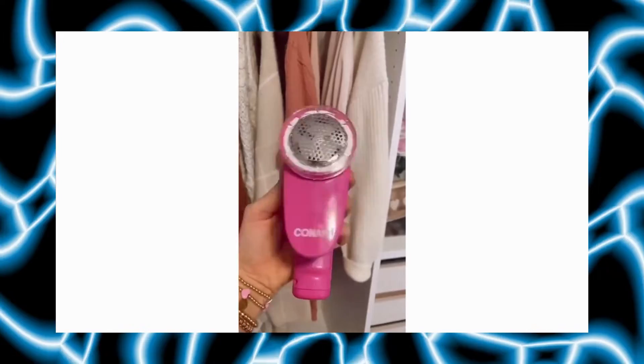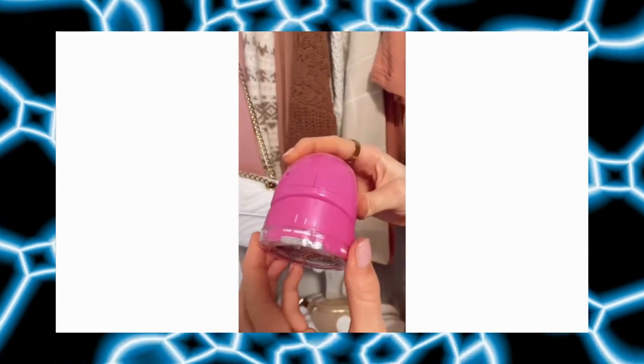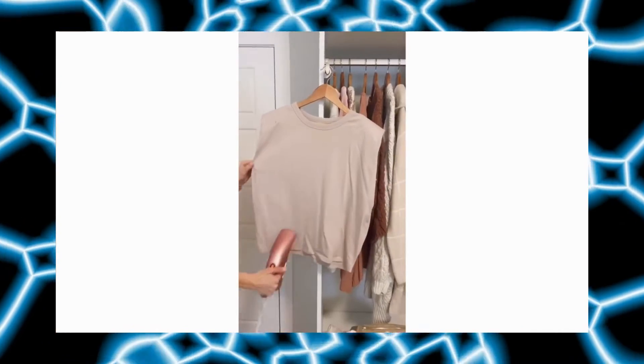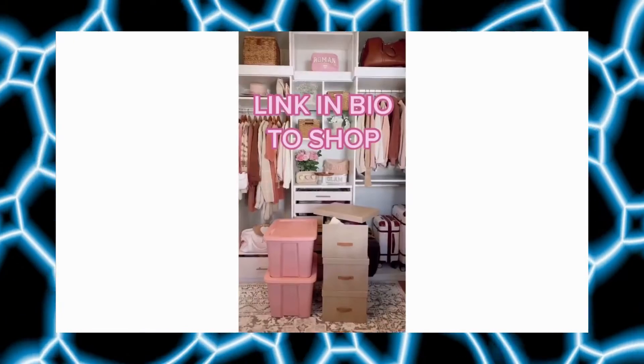Amazon home gadgets you need. This fabric shaver under $15 safely removes pills and unwanted broken and matted fibers from your favorite clothes and furniture, making them always look brand new. It's fully adjustable for a variety of fabric types and has a detachable lint catcher for easy cleanup. This rose gold and portable steamer preheats in 70 seconds and can be used on a variety of clothing and home items. Link in bio to shop all of these products.